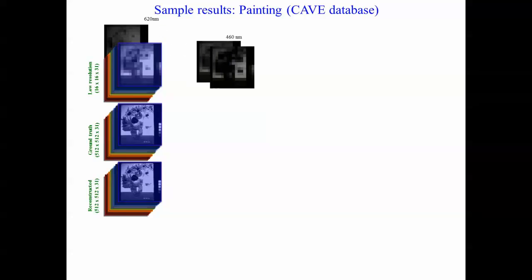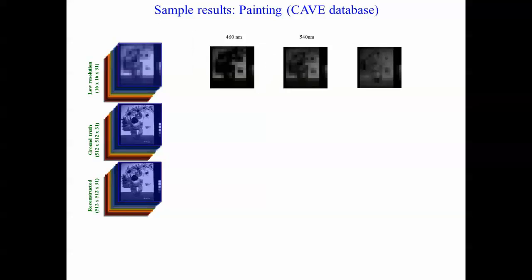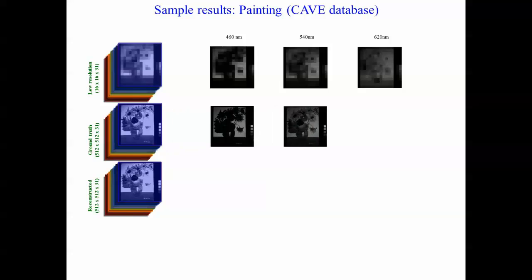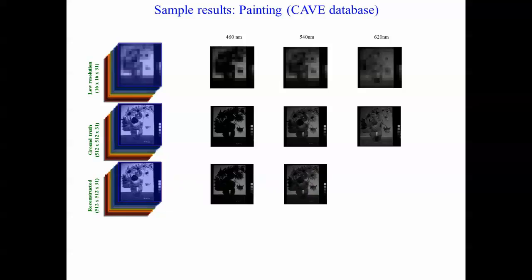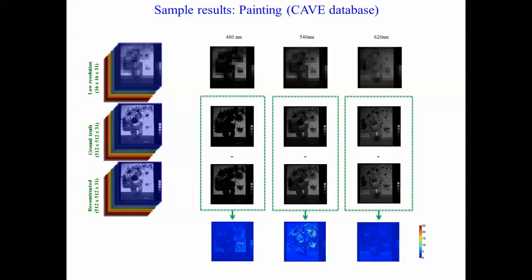For qualitative analysis, we display the spectral images of the input low-resolution image at wavelengths 460, 540, and 620 nanometers. The corresponding spectral images of the ground truth are also shown. We compare these images with the spectral images of the reconstructed super-resolution hyperspectral image. The slide also shows the absolute difference between the ground truth spectral images and the corresponding reconstructed images. The results are in the range of 8-bit images.